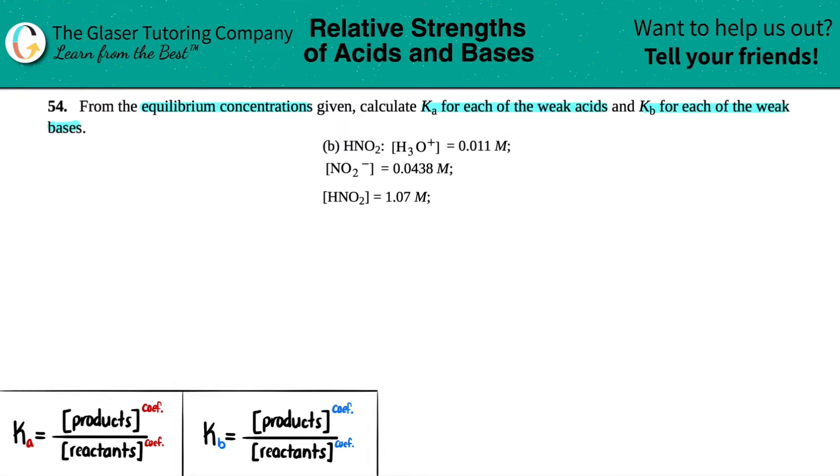So in this case, we're going to start off with HNO2. They told us that we have a H3O plus concentration of 0.011 molarity. We've got a nitrite ion concentration of 0.0438 molarity, and then HNO2 concentration of 1.07 molarity.